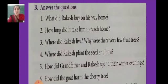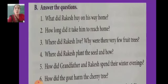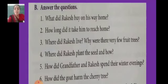Number 2: How long did it take him to reach home? It took Rakesh about half an hour to reach home. Question number 3: Where did Rakesh live? Why were there very few fruit trees? Rakesh lived with his grandfather at the foothills of the Himalayas on the outskirts of Mussoorie. There were very few fruit trees because the soil there was stony and the dry cold winds stunted — meaning prevented or stopped — the growth of most plants.